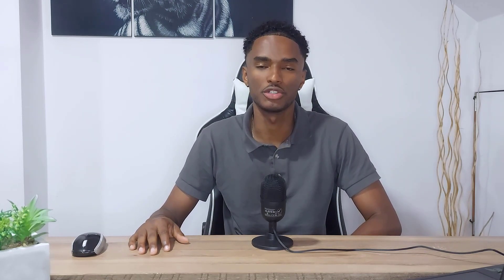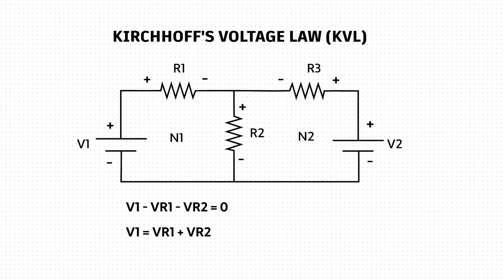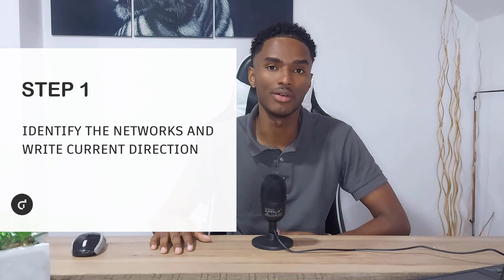Now it's time to talk about Kirchhoff's voltage law, or KVL. This law basically states that the sum of all the voltage drops must be equal to all the voltage rises in a single circuit network, or in other words, the sum of all the voltages — including rises and drops — must be equal to zero. There are some steps we need to follow before applying KVL. The first one is to identify the different networks in the circuit and write down the current direction.